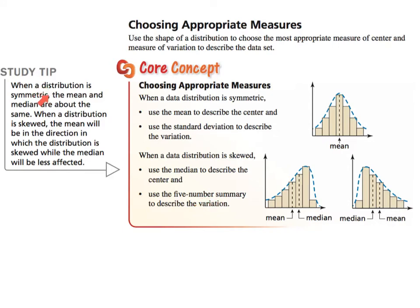Here's your study tip: when a distribution is symmetric, the mean and median are about the same. When a distribution is skewed, the mean will be in the direction in which the distribution is skewed, while the median will be less affected. For example, the mean has been skewed left because most of the data occurs on the right, but it's pulled left because of the tail, and this graph is skewed left.